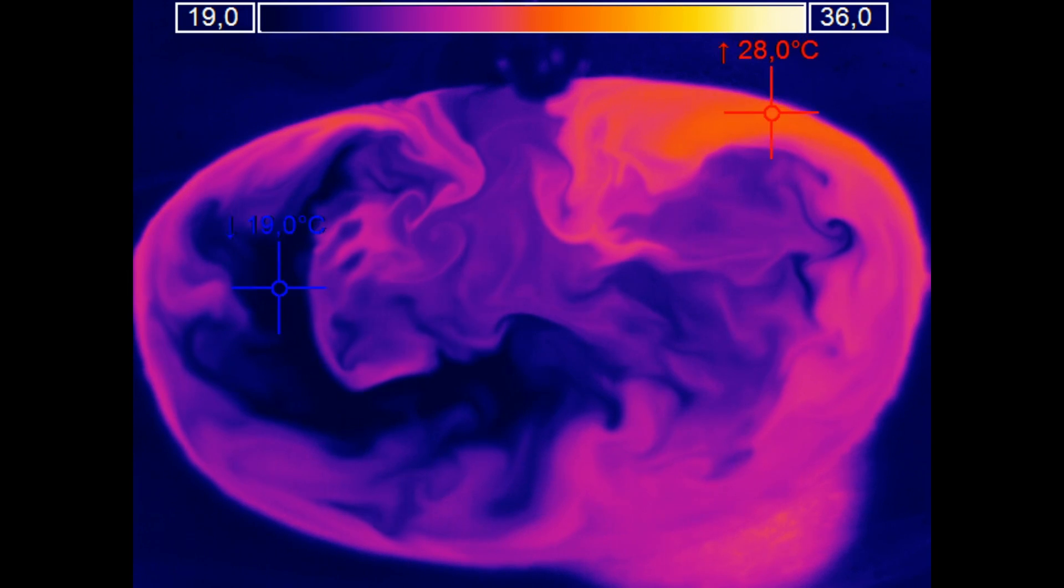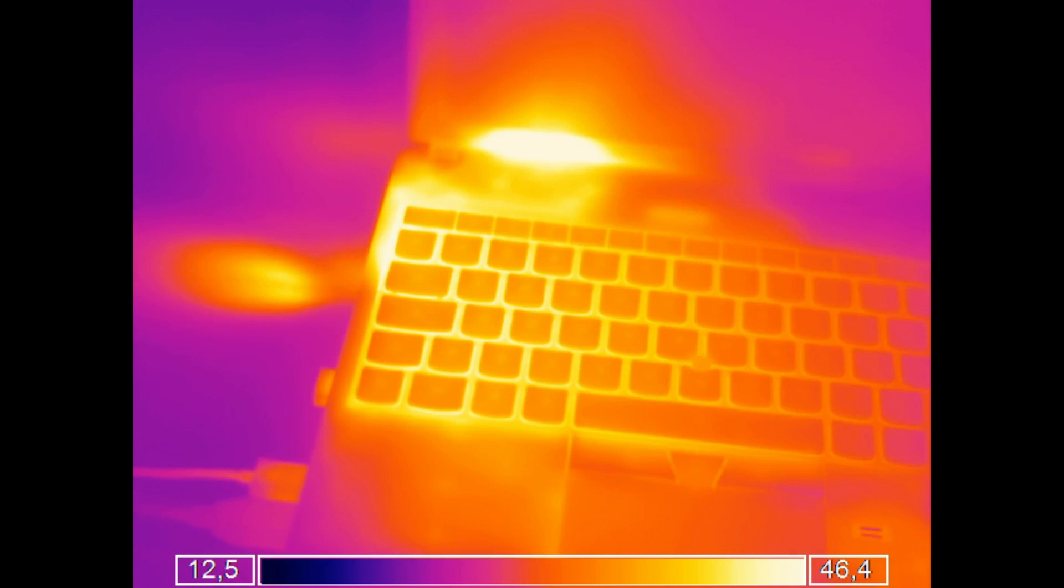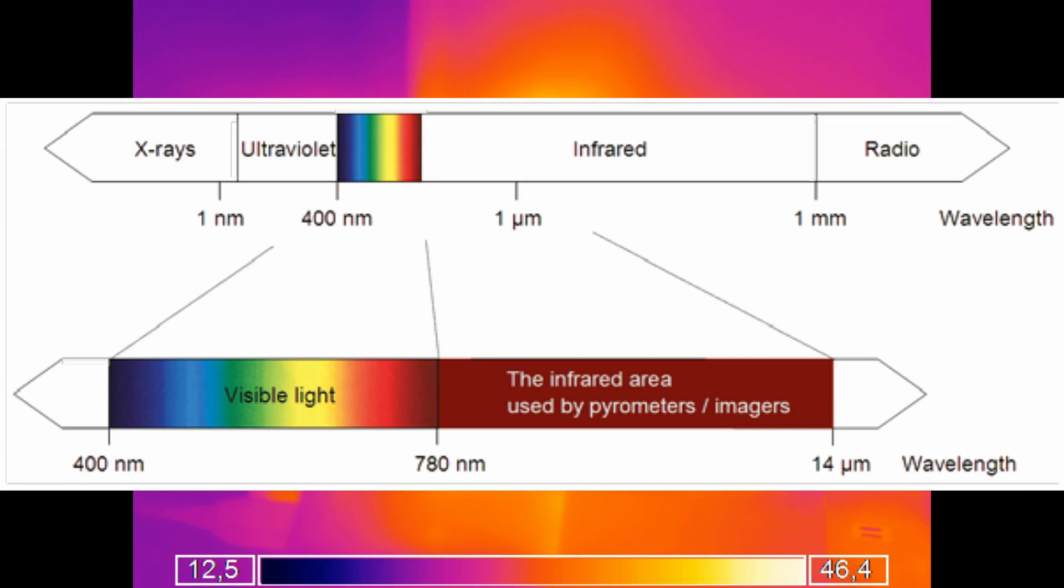But first, how does the infrared camera work? Like a normal camera, it records the light intensity. But as the name implies, it records the infrared light from about 7 to 14 micrometers.